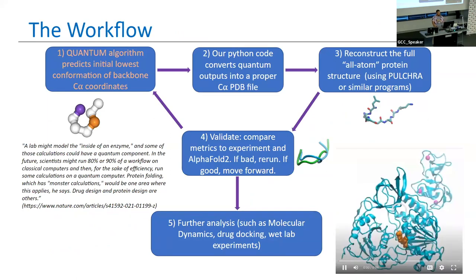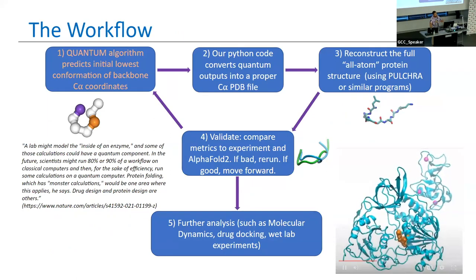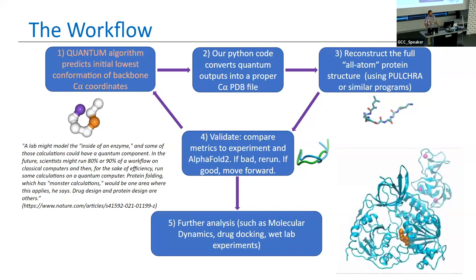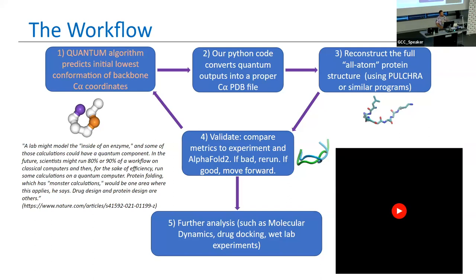This is what the workflow looks like. There's a paper in Nature that highlights the main point: we're not trying to make classical computers obsolete, but we are trying to give them the hardest 10 to 20% of the scientific workflow. In the case of protein structure prediction, that means predicting the coordinates of the coarse-grain alpha-carbon backbone. We hand this off to an IBM quantum computer, use Python code to convert the output to a PDB file, then rebuild the all-atom structure of the protein and validate it.